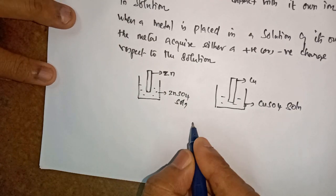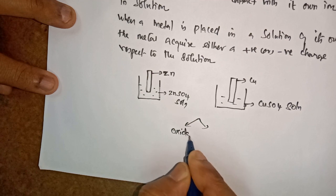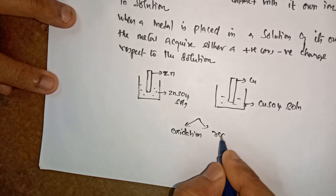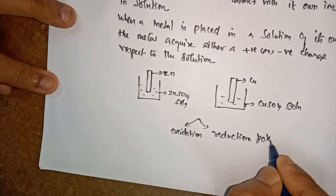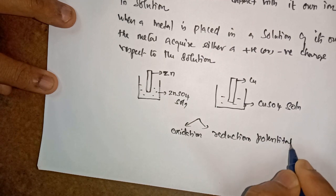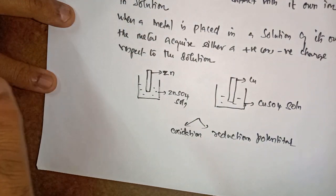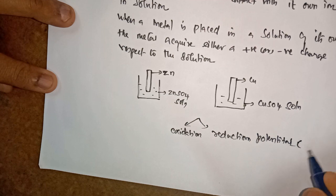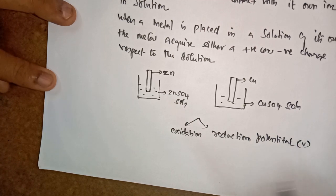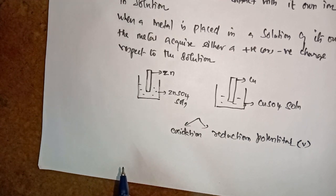There are two different types of potential. One is called oxidation potential and another one is called reduction potential. The unit for electrode potential is the SI unit volt. Potential, potential difference — all are given in the SI unit volt.